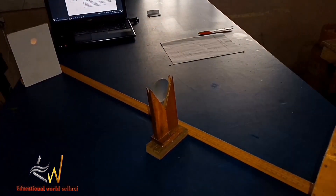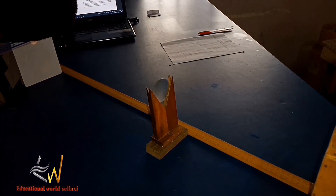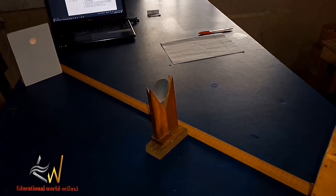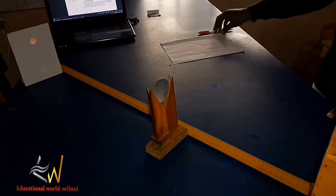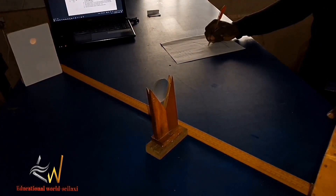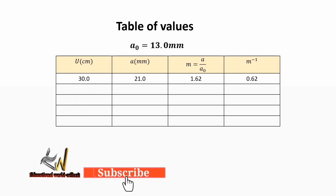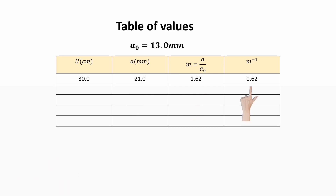I am reducing the brightness of my camera so you can see the clear image formed. We are going to measure the diameter or the size of that image formed on the screen. The diameter of the image formed is 21.0 millimeters. So in our table of values, when U is 30.0 cm, A is 21.0 mm. Magnification, which is A over A₀, is 1.62 and the inverse is 0.62.